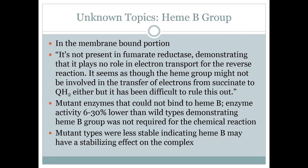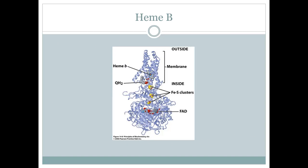Before wrapping up, let's discuss another unknown topic about the enzyme: the heme B group. It's located in the membrane portion of the enzyme, but it's not exactly clear what its function is. Some researchers created a mutant enzyme that could not bind with heme B. The mutant enzyme had about a 6% to 30% reduction in activity, but they deduced that even though it was lower functioning, the heme group was not required for the chemical reactions. They also observed that the mutant types were less stable than the wild types, indicating that heme B may have more of a stabilizing effect on the overall structure rather than a functional effect.